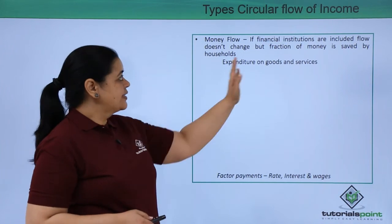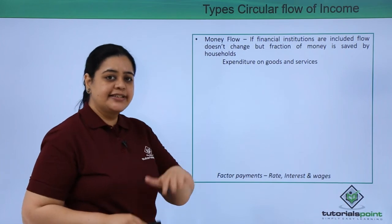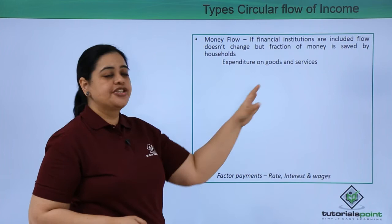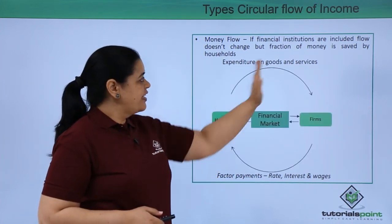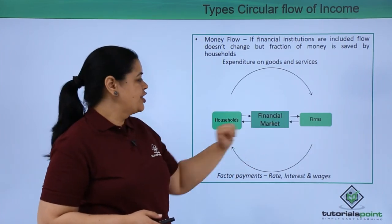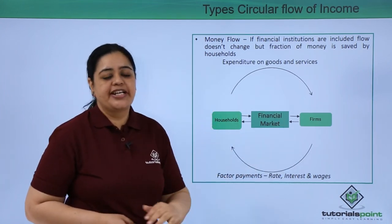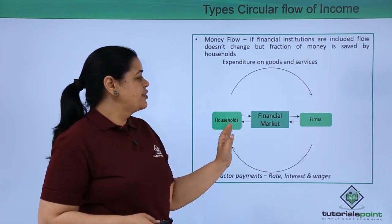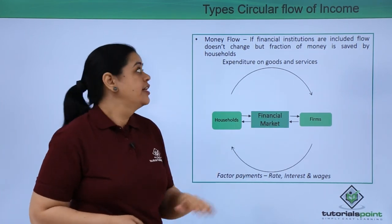The next comes money flow when financial institutions — that is banks — get involved. Here the flow will not change but a fraction of money will get saved. Households will not spend everything on the firms; some money would go to the financial market. The factor payments — rate, interest, and wages — would be received, and households will continue spending on goods and services, but not 100%. Some of that would get saved. These are the different types of circular flow of income.